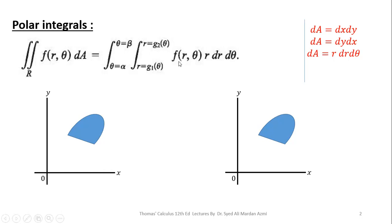f(r, θ) is the function of r and θ. Since in a polar integral r is our inner variable, the limits of r may be constants or real numbers. Since θ is our outer variable, the limits of θ are always in the form of constant numbers — in the form of radian angles.